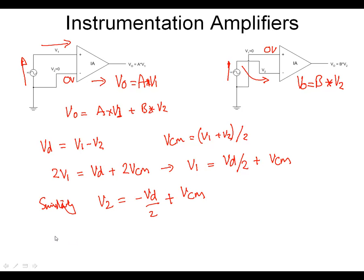If we're now to write those in terms of Vout, we now have my output voltage Vout would be equal to A, common mode voltage, plus differential voltage over 2, plus B, common mode voltage minus differential voltage over 2.